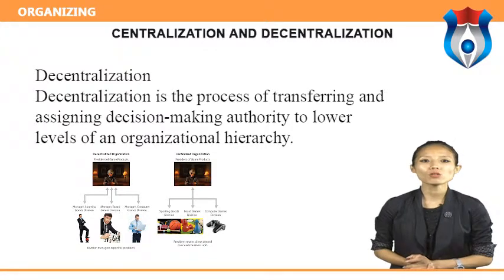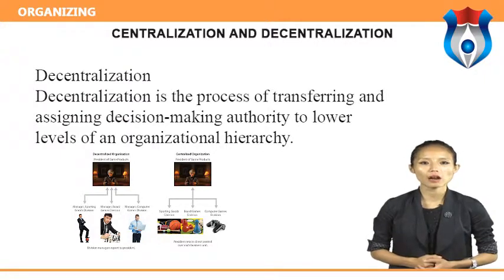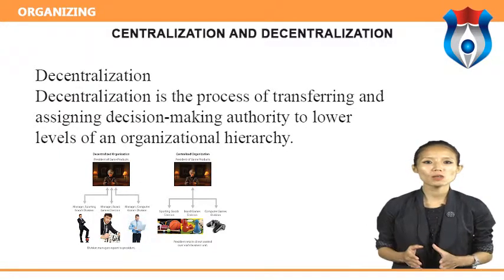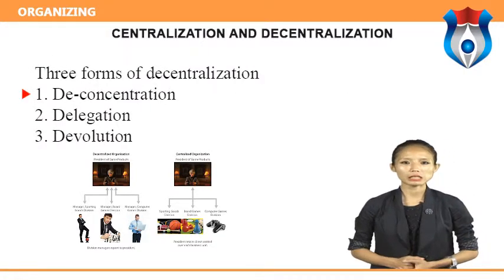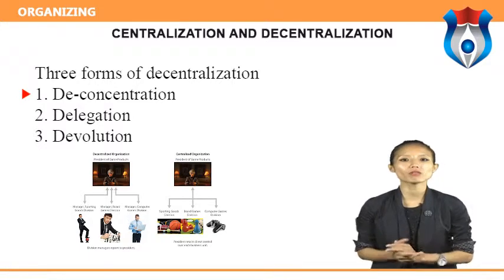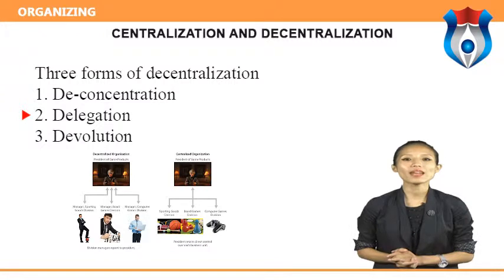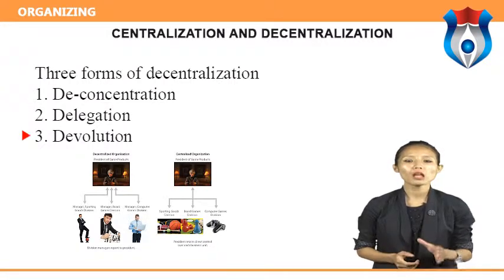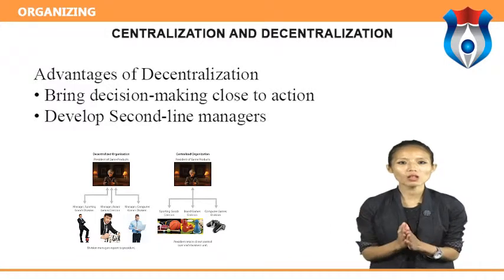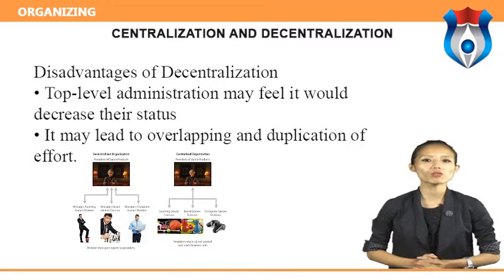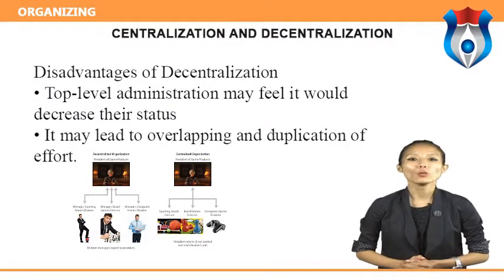Decentralization is a process of transferring and assigning decision-making authority to lower levels of an organizational hierarchy. Characteristics include democratic, participative decision-making with detailed participation and accountability, and low risk of 'not invented here' behavior. There are three forms of decentralization: de-concentration — the weakest form; delegation — a more extensive form; and devolution — a third type. Advantages of decentralization include bringing decision-making close to action and developing sound line managers. Disadvantages include top-level administration feeling it decreases their status and potential for overlapping and duplication of effort.